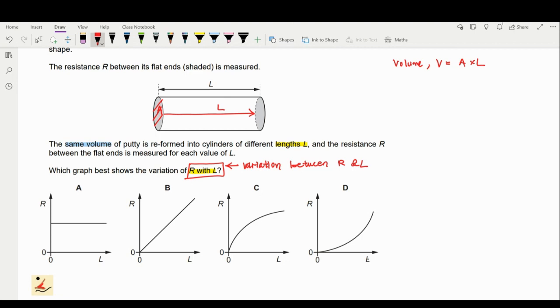The volume is constant, so we're going to rewrite the equation as area equal to volume divided by the length. So area is proportional to 1 over the length. This is your first variation.